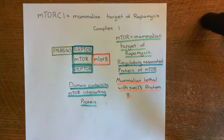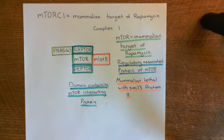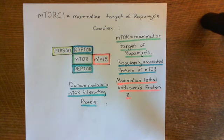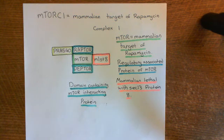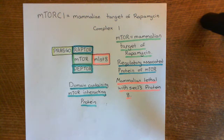What we want to understand next is how AKT leads to the activation of this mammalian target of rapamycin complex 1, because it is mTORC1 that causes the differentiation of the cell into a T helper nought cell (in the case of CD4-positive naive T cells) or a cytotoxic T cell (CD8-positive naive T cells), and then triggers proliferation. How does AKT activate mTORC1? We'll see that in the next video.